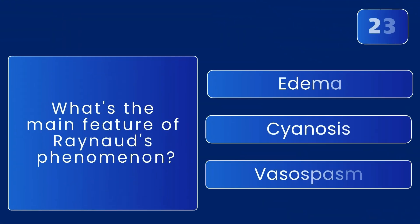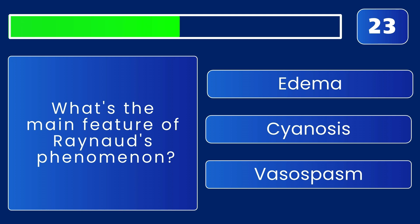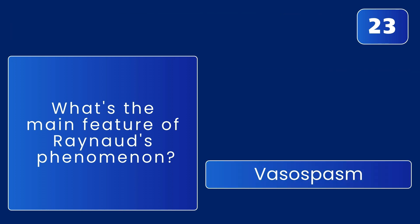What's the main feature of Raynaud's phenomenon? It's vasospasm — the blood vessels constrict, causing color changes.